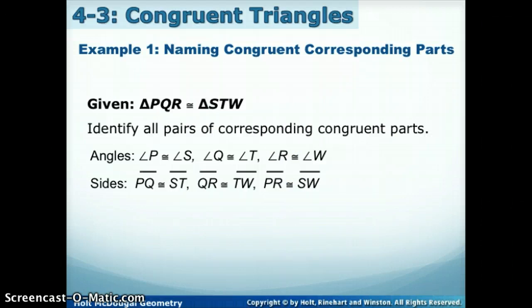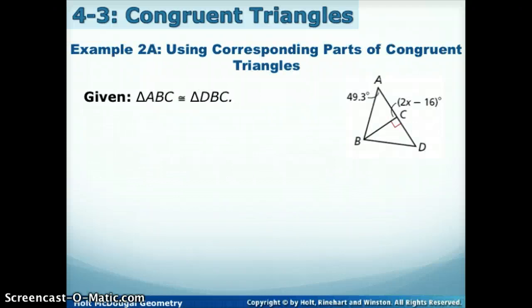Now let's use some of these, knowing our congruent parts from our statements. Let's use that to find some missing measures. So if I give you that ABC is congruent to DBC, so now we know which parts are congruent to each other, what can we do to find the value of X?